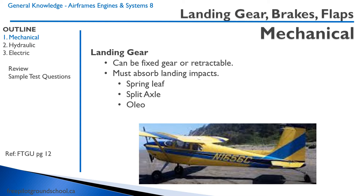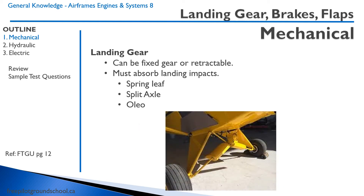Common in light aircraft is a spring leaf — just a simple rod or bar of spring steel. You can also have a split axle or an oleo. An oleo is most similar to what you would know as a shock or a strut in a car. Looking closely inside those aerodynamic fairings at the bottom that kind of look like little wings, it's a set of bungees — that's called a split axle type landing gear — and those bungees provide the shock absorption for landing.